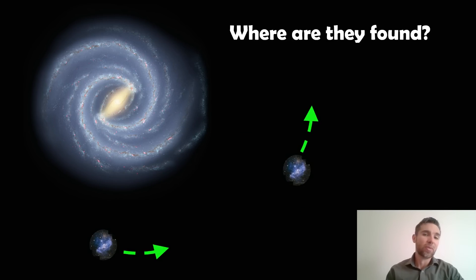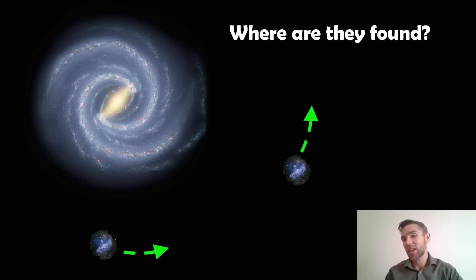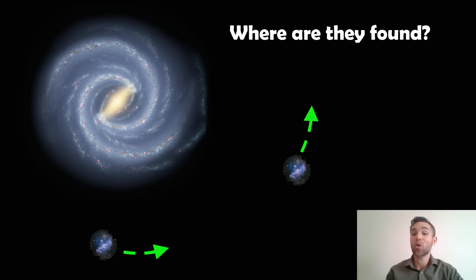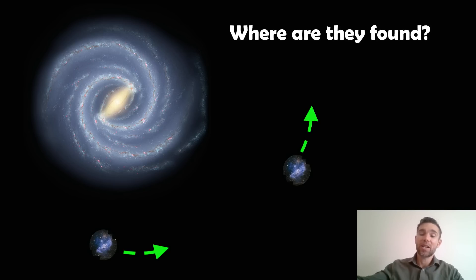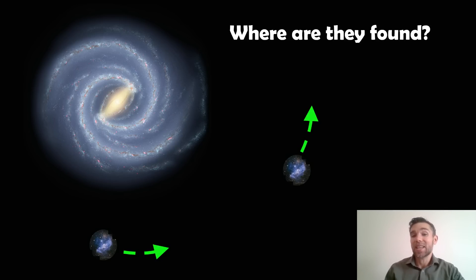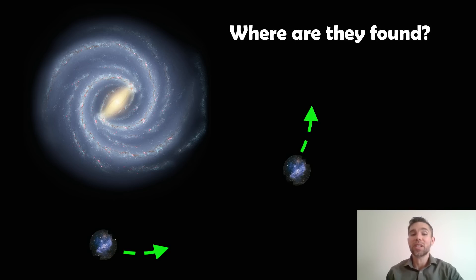Where do we typically find them? We can find them in galaxy clusters, but also orbiting other large galaxies. The Milky Way and the Andromeda galaxy both have satellite dwarf galaxies orbiting them that we can see really well. It's very common to see dwarf galaxies gravitationally bound to or orbiting these larger galaxies, although eventually they will get tidally distorted and probably end up merging with the larger one.